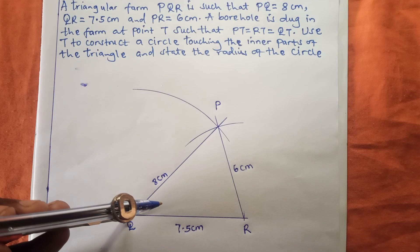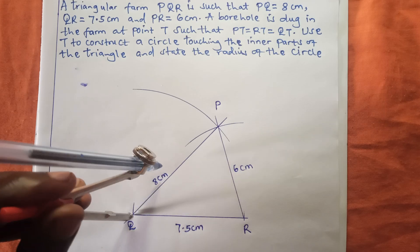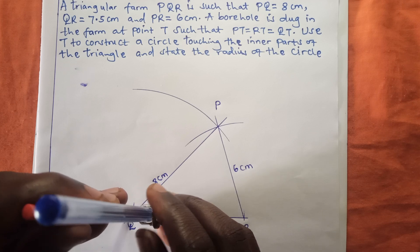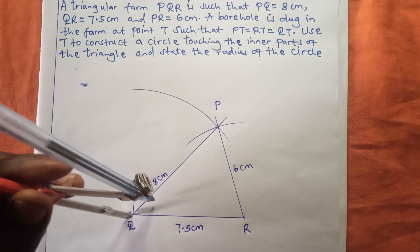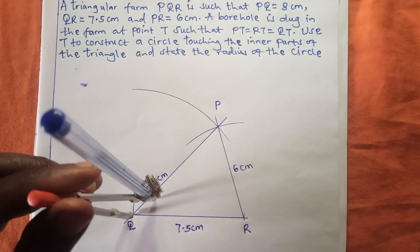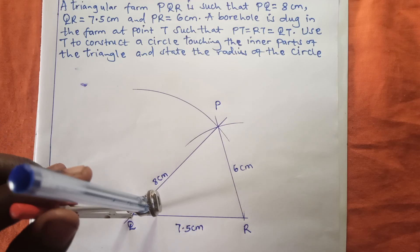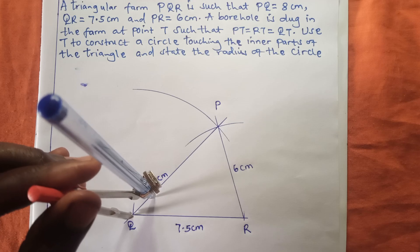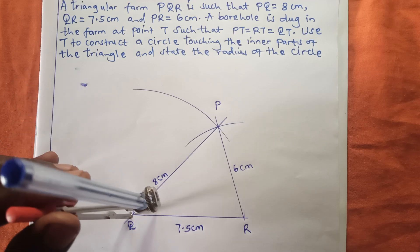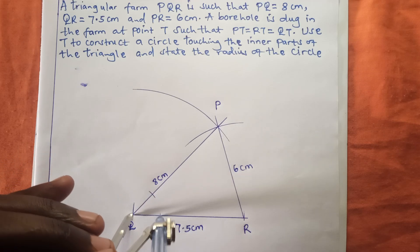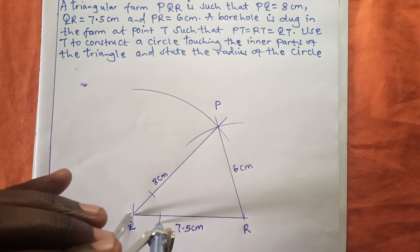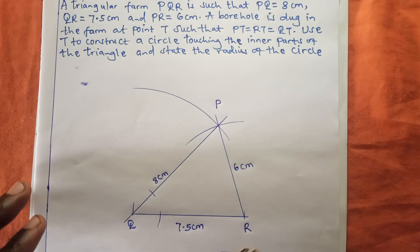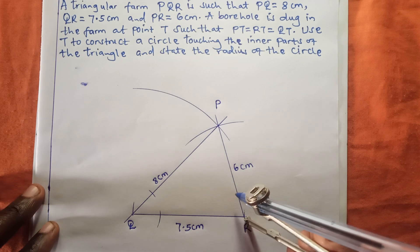Let us bisect this angle. I have adjusted my pair of compass to any length of my choice and I want to make an arc on line PQ. Using the same length, I will also make an arc on line QR. I do not want to change this length.